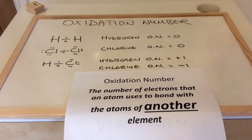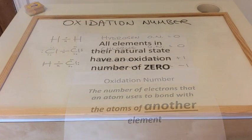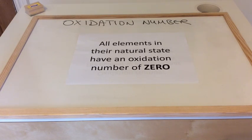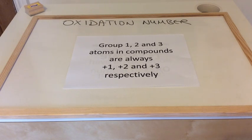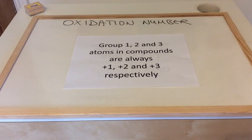There are also a set of rules we can use. The simplest rule is about elements: all elements in their natural state have an oxidation number of zero, because they're not bonding to another type of element. For members of groups one, two, and three in compounds, they are always plus one, plus two, and plus three respectively. So sodium in compounds is always plus one, magnesium always plus two, aluminium always plus three. Group one have one electron in their outer shell, so they use that one electron when they bond to other atoms.